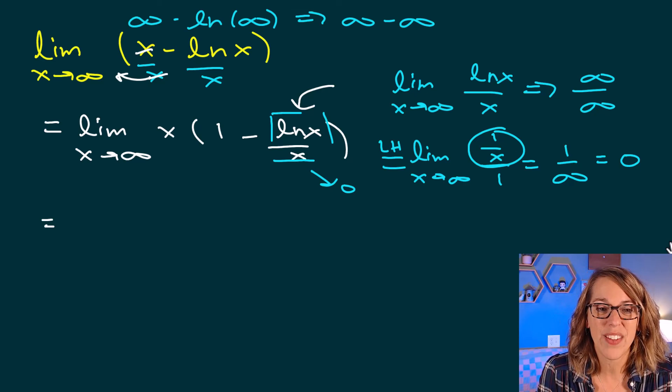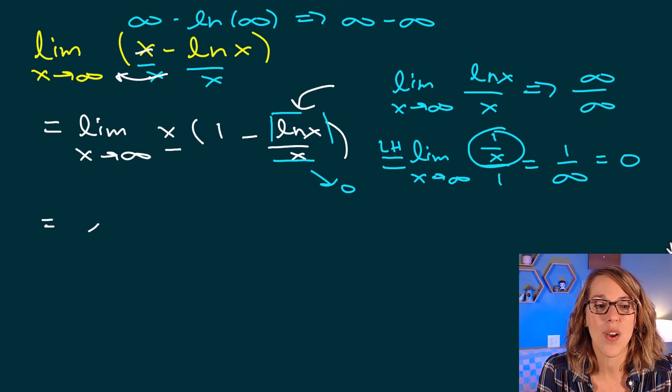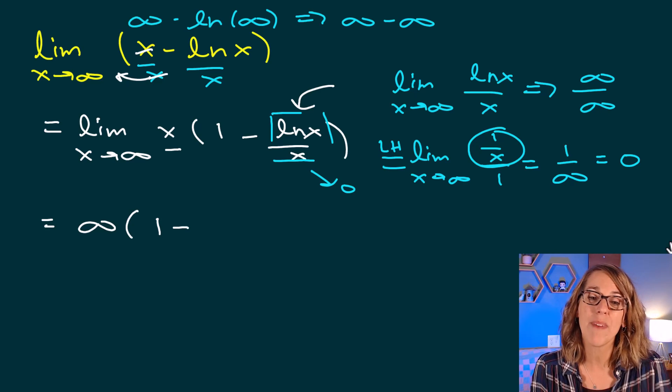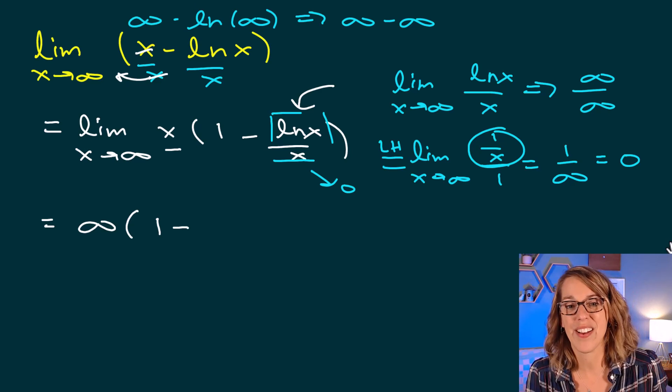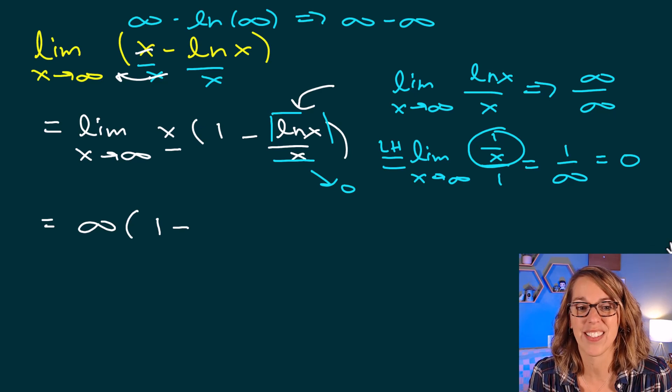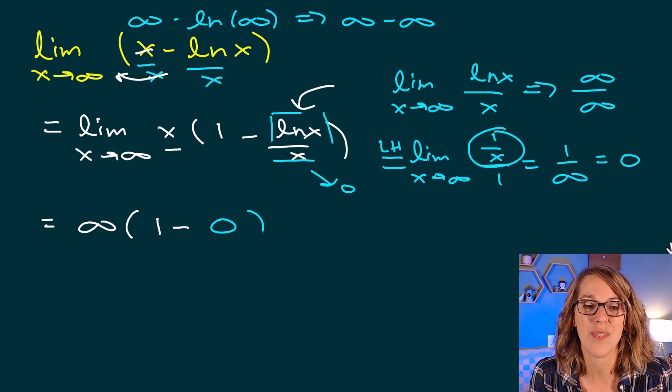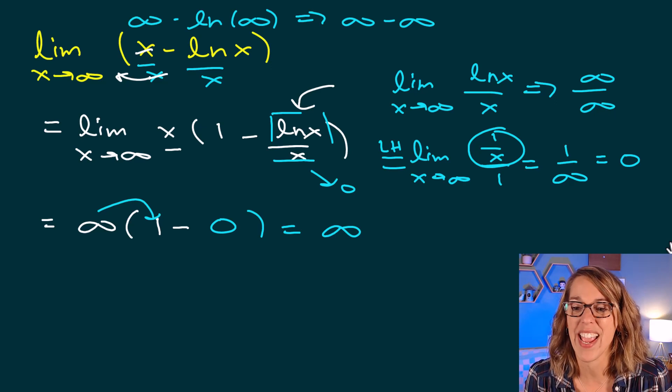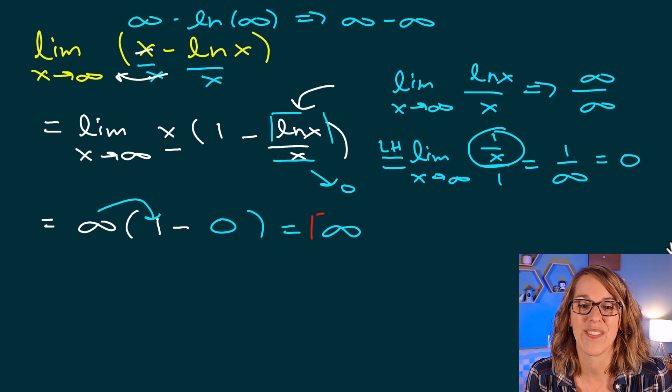So as I'm applying infinity, the limit as x goes to infinity of x goes to infinity. In the parentheses, I get 1 minus the limit of the natural log of x over x, which goes to 0. And I end up with my answer, which is infinity.